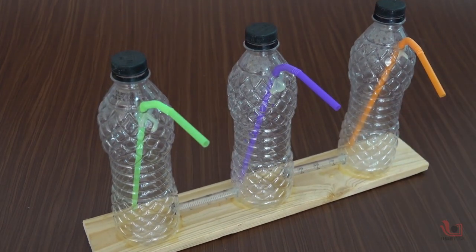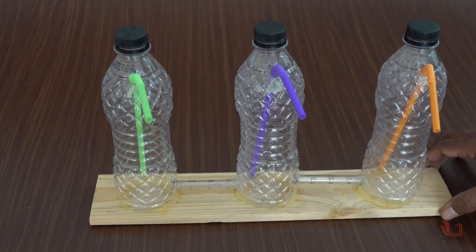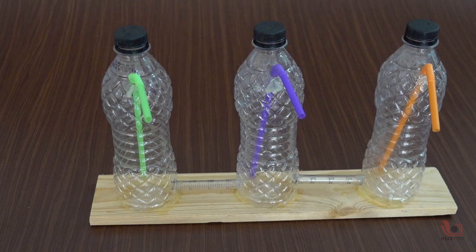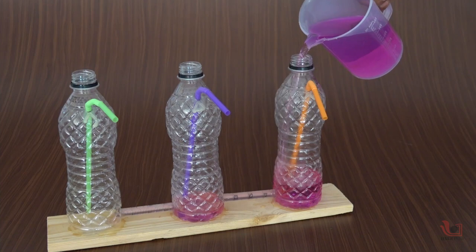Fix the bottles on the wooden plank with help of glue and wait for the glue to dry. When the glue dries, remove the caps from the bottles and fill them completely with colored water.